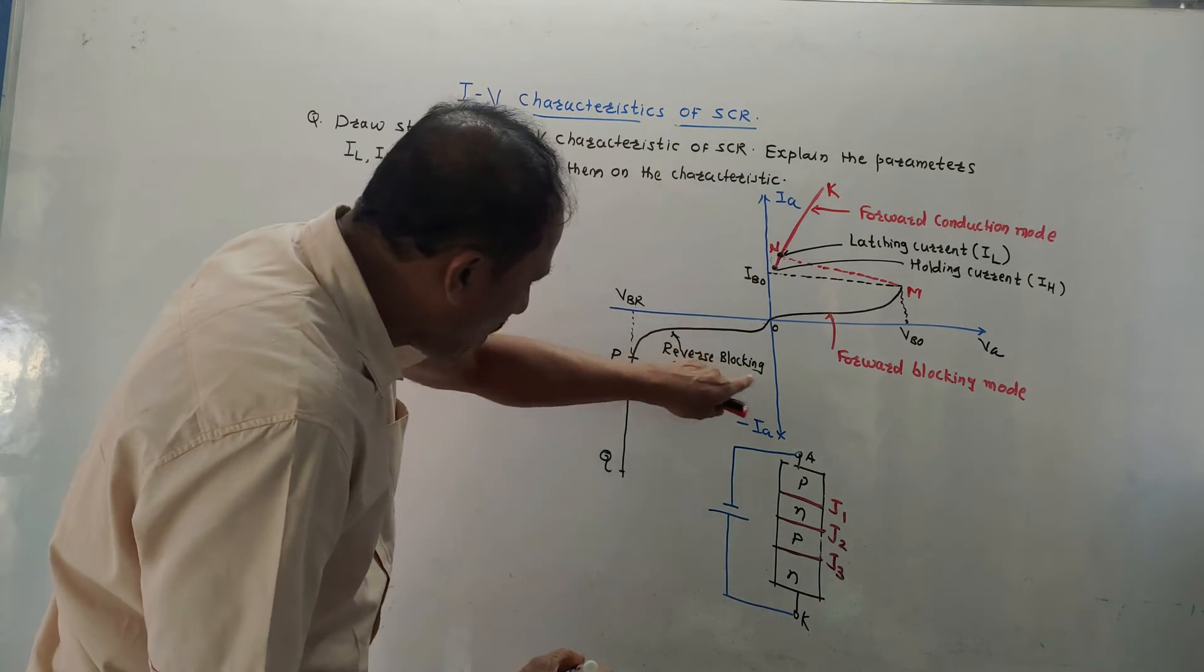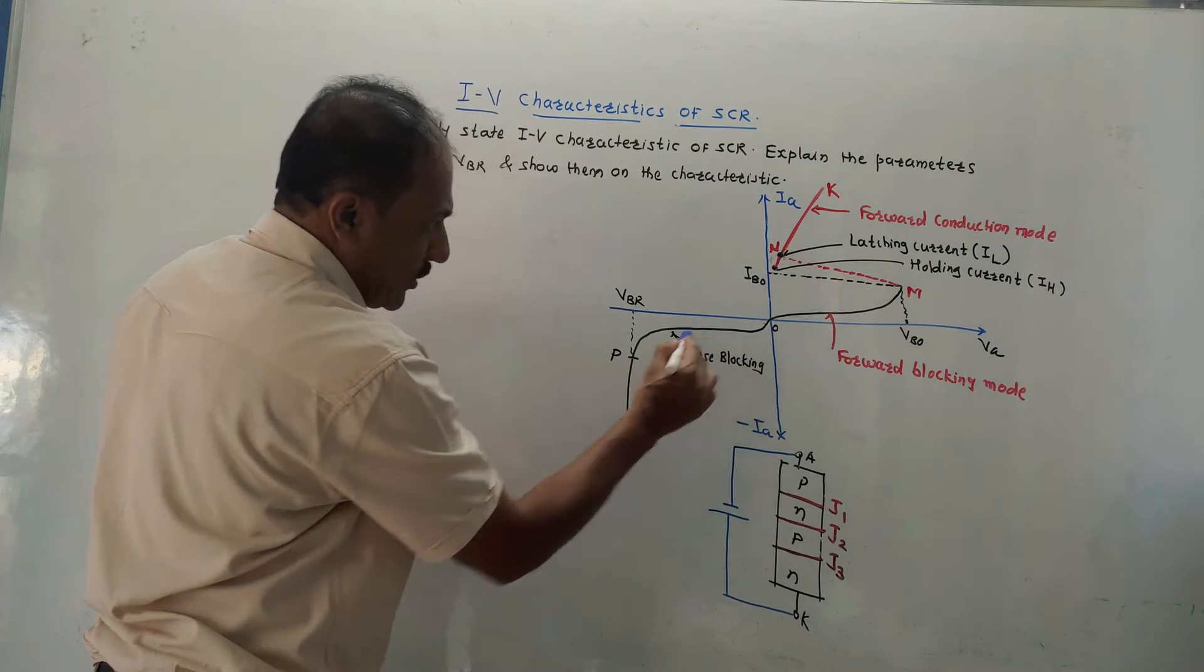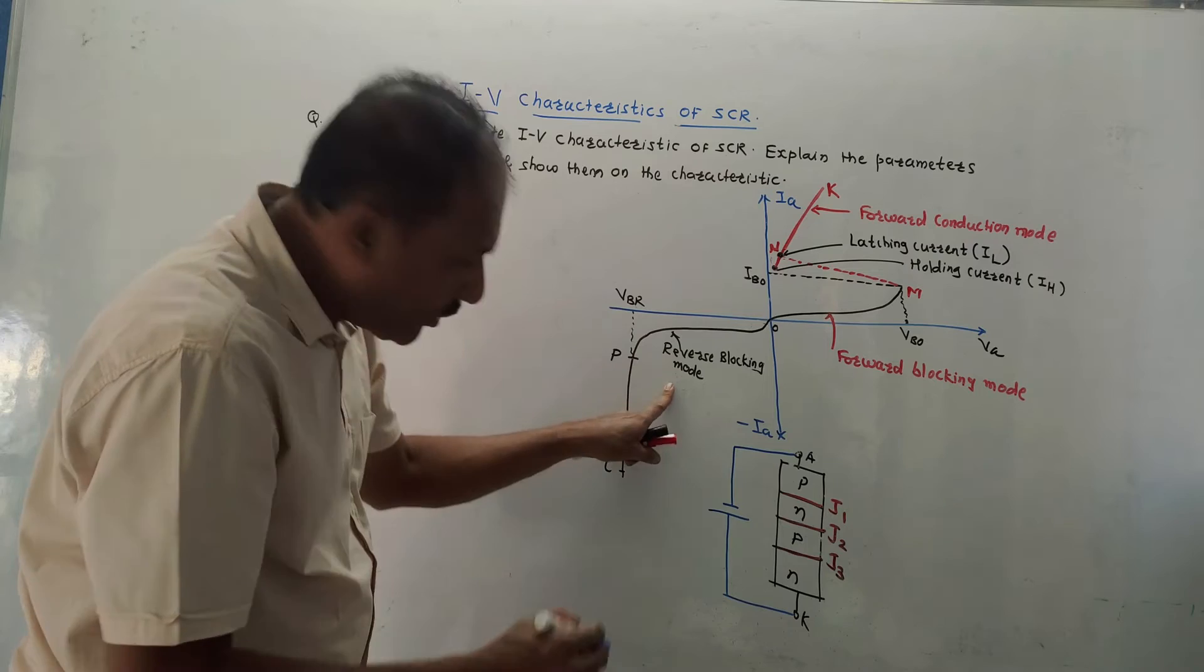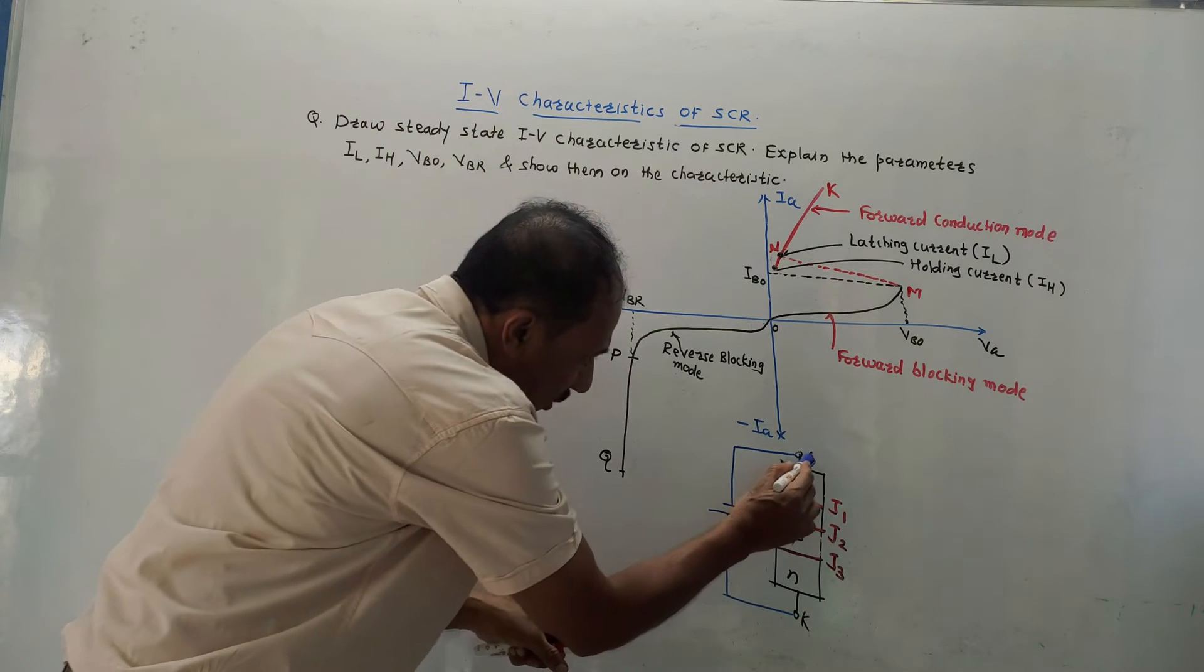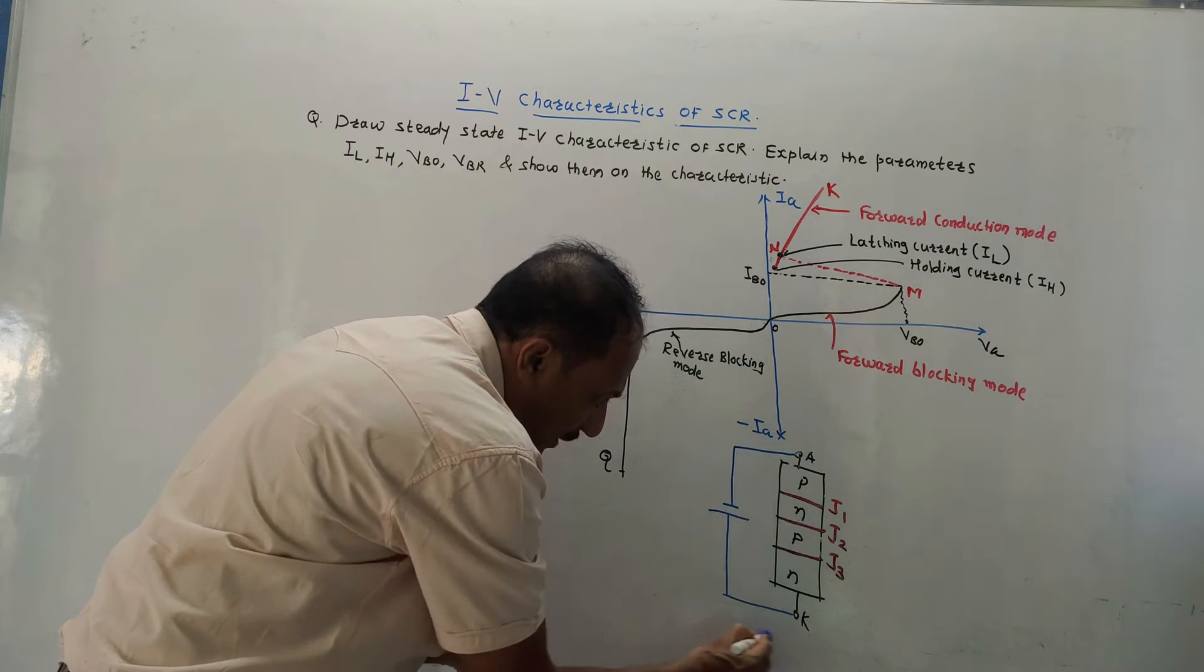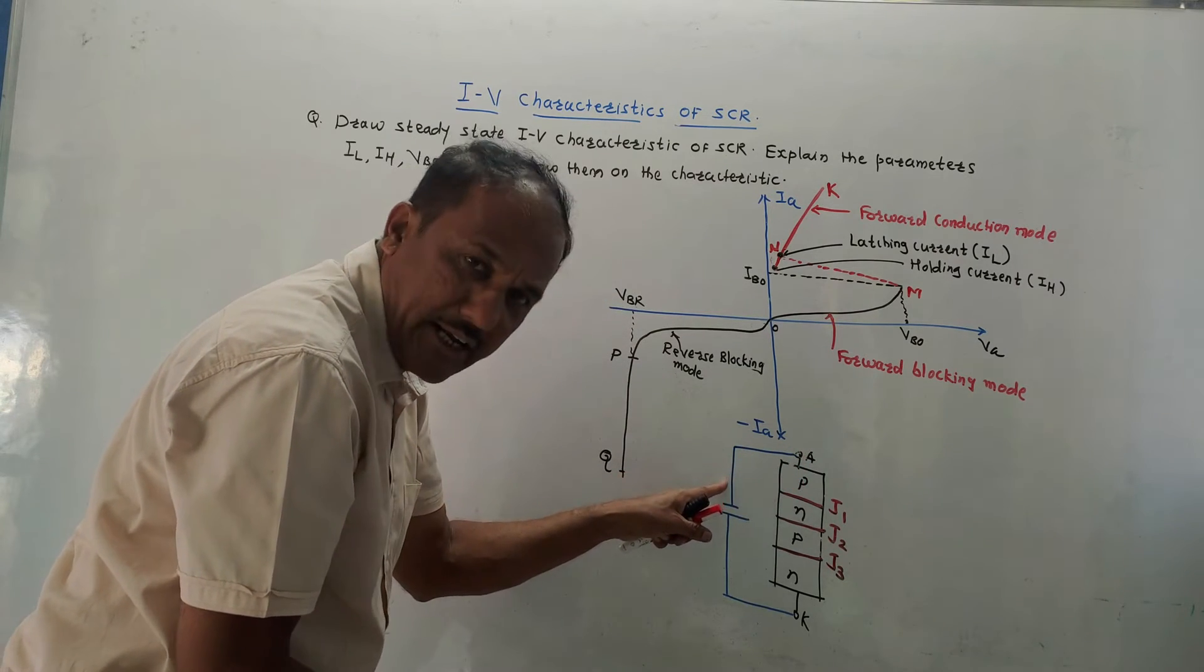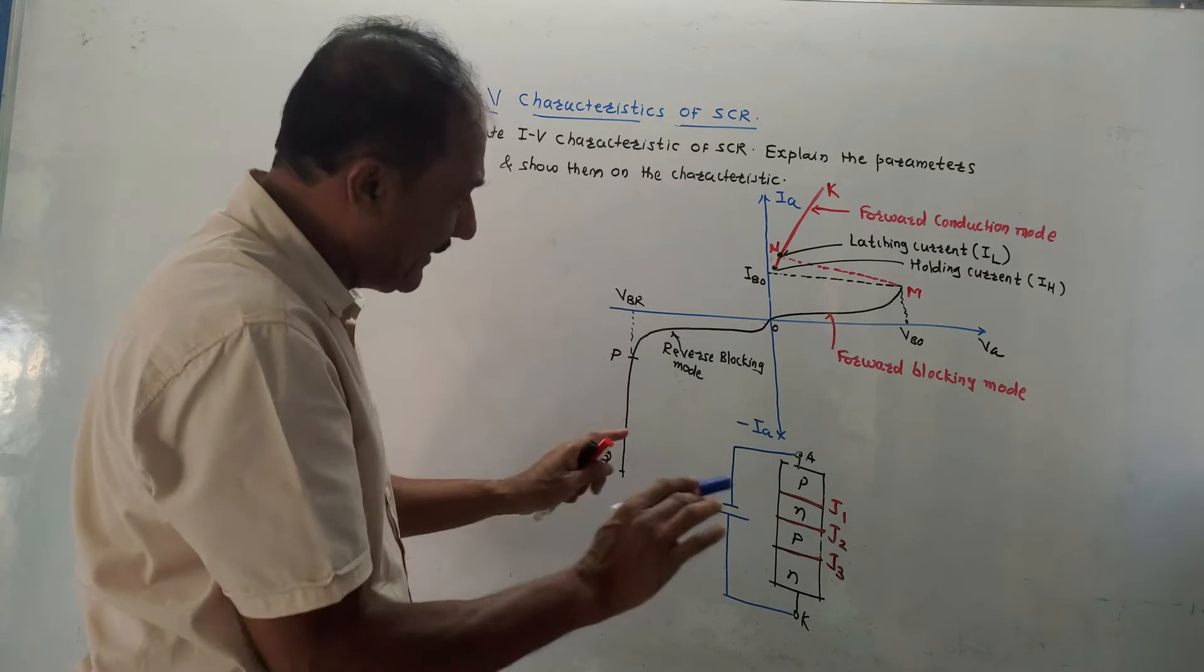First mode of operation is reverse blocking mode. Now in case of reverse blocking mode, as shown in this diagram, anode is made negative compared to the cathode. Positive is connected to the cathode, anode is made negative, and I have not applied the gate current.